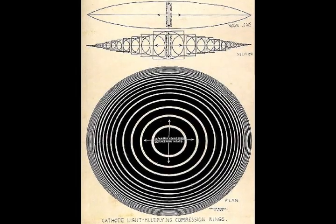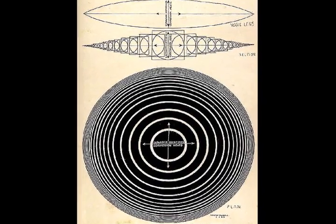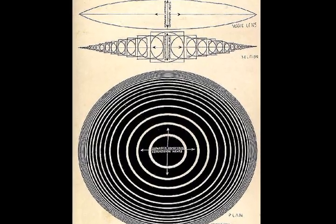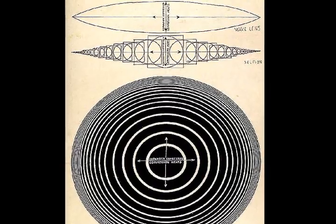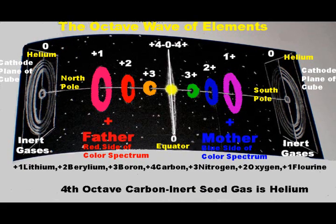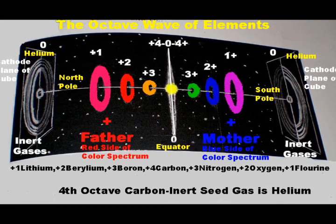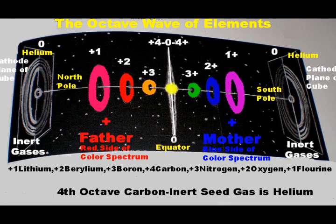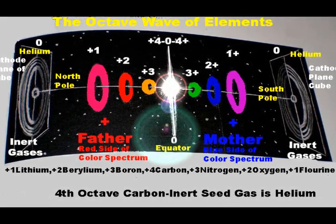Biconvex electric light lenses compress electricity inward, generating heat, higher potential, and rapid spiraling vortex motions. These are formed from cathode waves which compress spiraling electric waveforms from cathode planes of cold magnetic stillness to anode centers of intense cyclonic fury and heat.